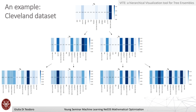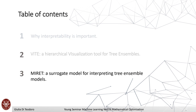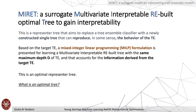The same representation can be developed using the feature frequency per node. This information on feature frequency was also used in MIRET — the surrogate model we developed. The idea was to replace a tree ensemble classifier with a newly constructed single tree that can reproduce the behavior of the tree ensemble. Based on this target tree ensemble, we present a mixed integer linear programming formulation for learning a multivariate interpretable tree with the same maximum depth as the trees of the forest.